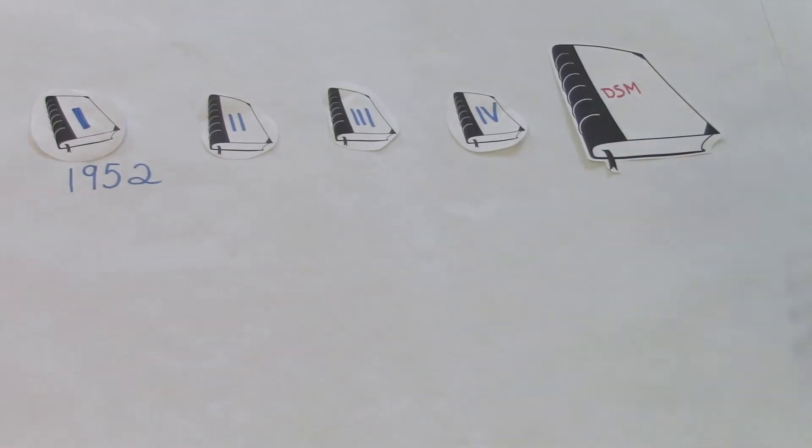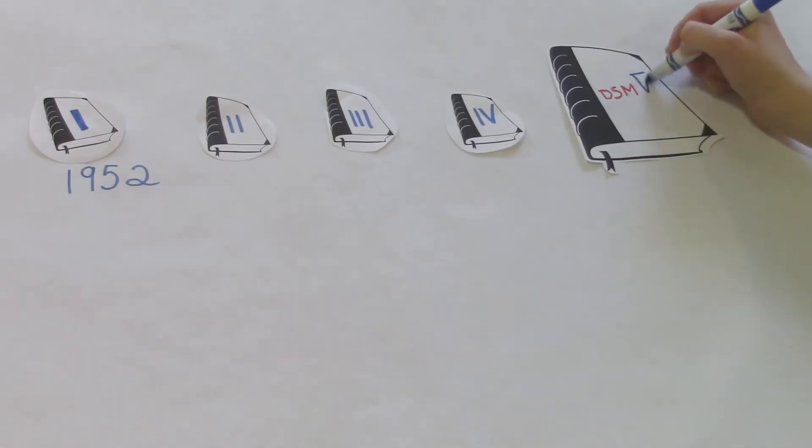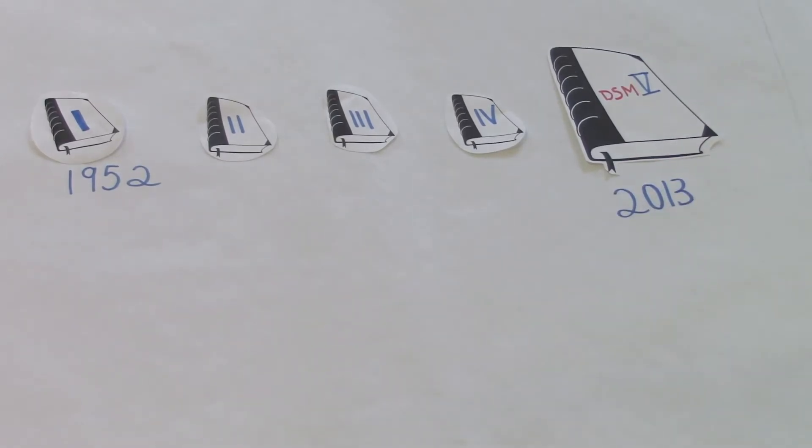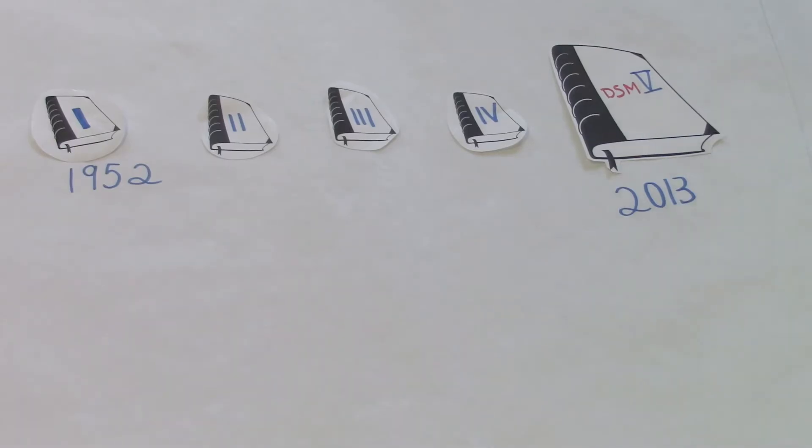The first DSM, or DSM-1, was published in 1952 with the goal of collecting statistical information and providing a standard for diagnosing and understanding mental disorders. The DSM has since been updated, and as of 2013, it's now on its fifth edition, the DSM-5.